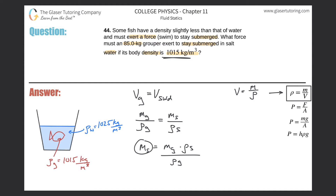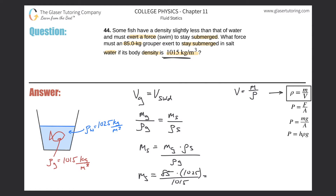Let's plug in the numbers: 85 kg × 1025 / 1015. This is essentially 85 multiplied by the ratio of the two densities. Calculating this gives approximately 85.8 kilograms — that's the mass of salt water displaced by the submerged grouper.